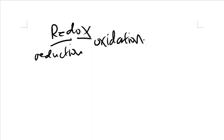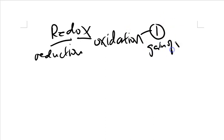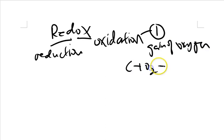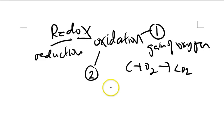The term oxidation is defined by four different parameters. The first one is the gain of oxygen. A simple example would be carbon burning in oxygen to give you carbon dioxide. So carbon is oxidized into carbon dioxide — this is the first definition of oxidation.